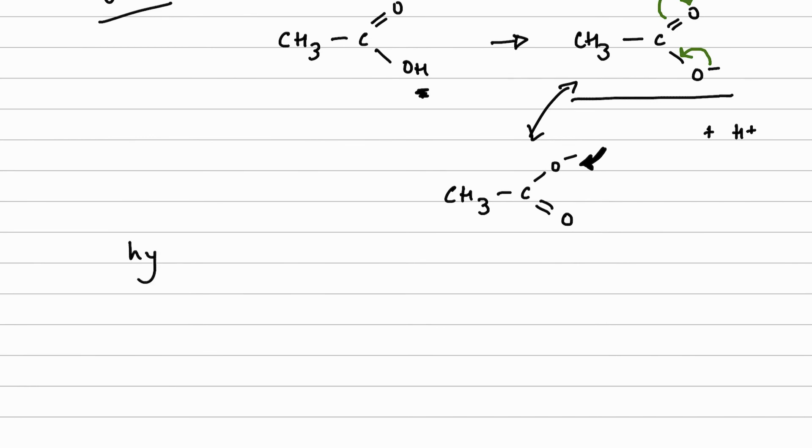And our resonance hybrid would be drawn like so: CH₃-C-O-O. We've got our pi electrons and our lone pair that was the negative charge kind of spread out over the COO group at the end here, and there is our negative charge. So it's been stabilized across the carboxylate ion.